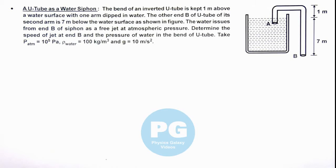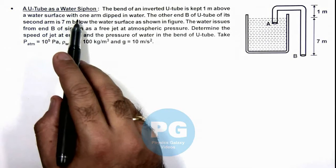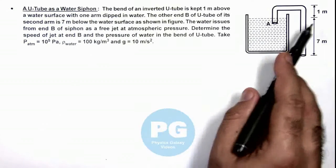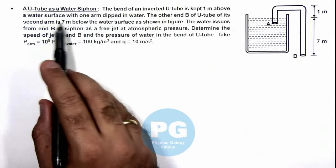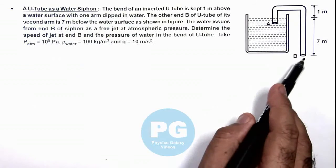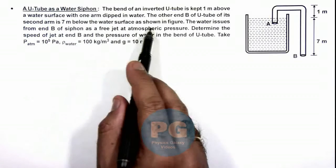In this illustration, we'll analyze a U-tube as a water siphon. We are given that the bend of an inverted U-tube is kept 1 meter above a water surface with one arm dipped in water, and the other end B of the U-tube's second arm is 7 meters below the water surface as we can see.